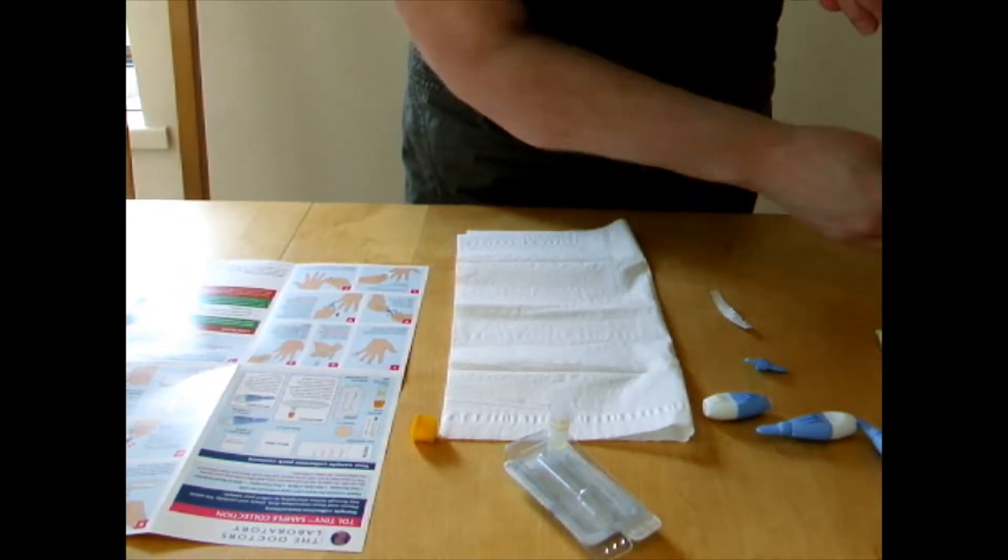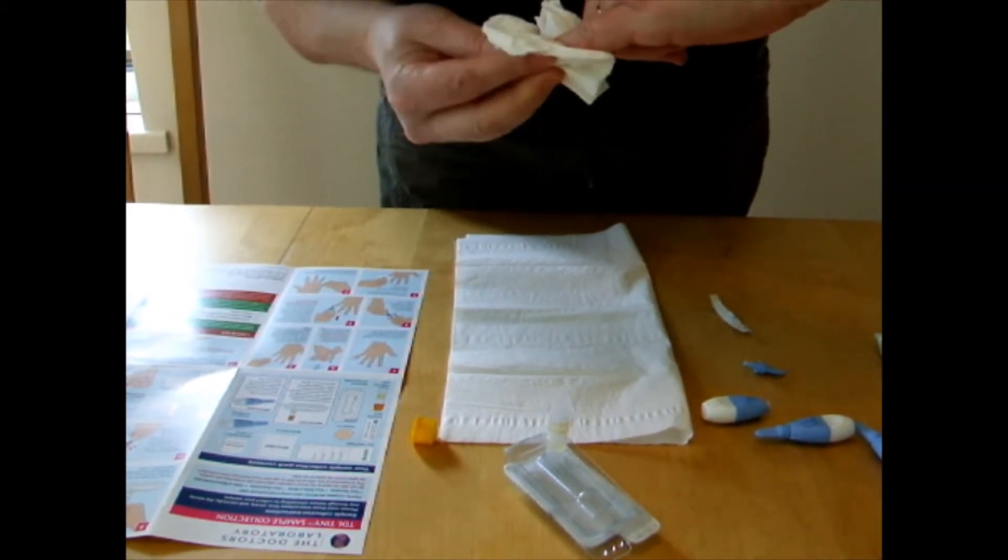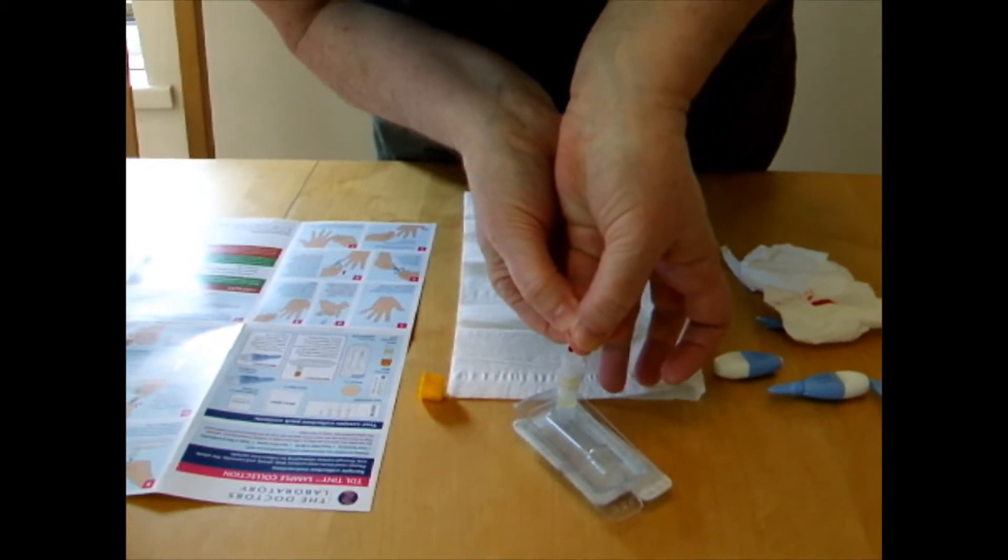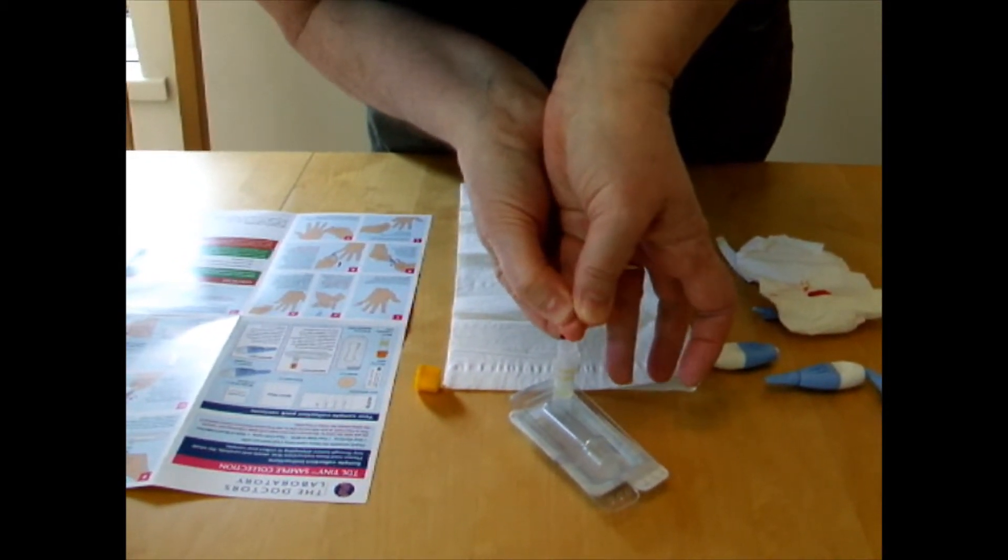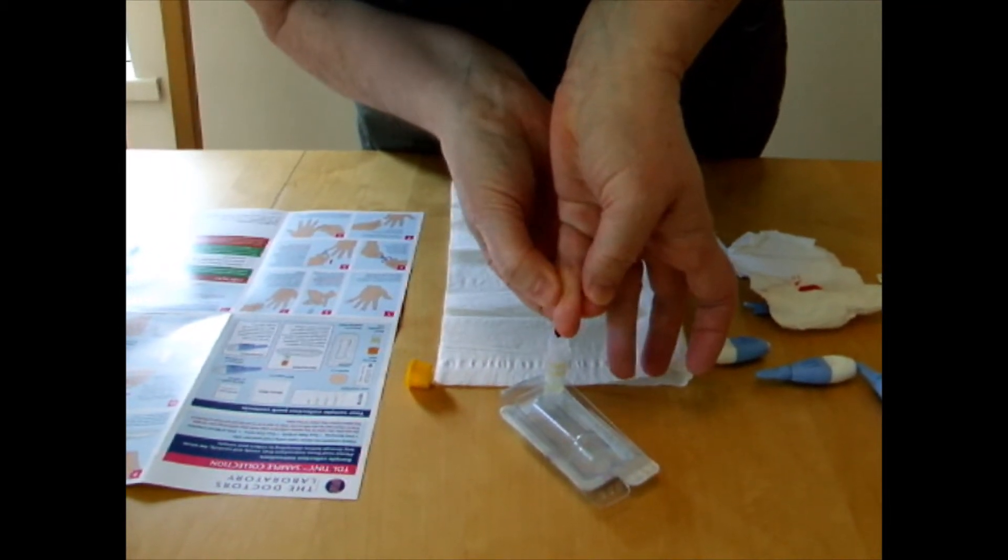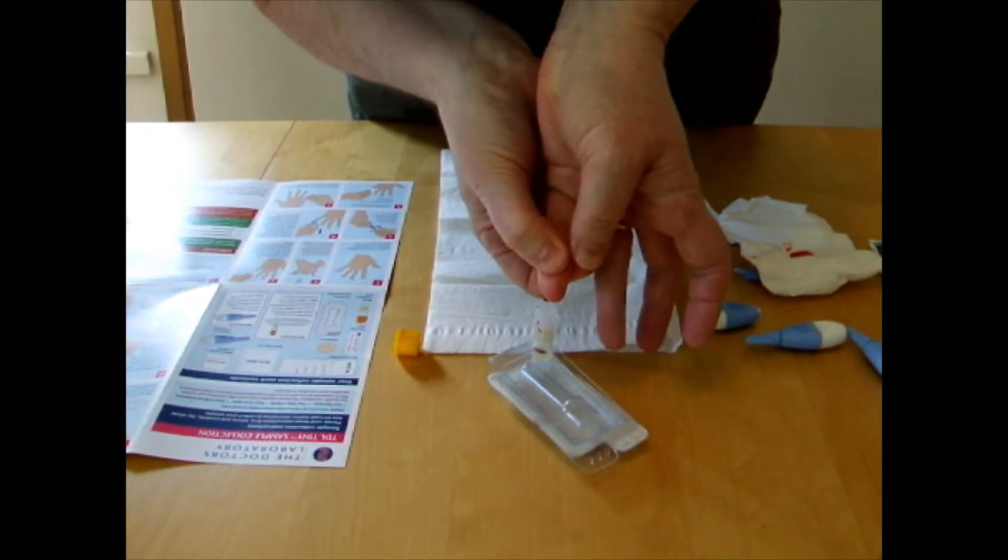If it goes around the back of your nail, wipe your finger and start again so that you can get it to flow into the tube. Just milk your finger, don't squeeze because if you squeeze it'll stop the blood flow.